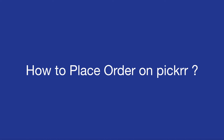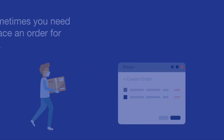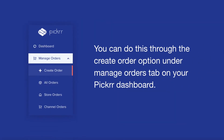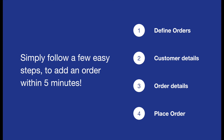How to place an order on Picker. As a seller, sometimes you need to manually place an order for your customer. You can do this through the Create Order option under the Manage Orders tab on your Picker dashboard. Simply follow a few easy steps to add an order within 5 minutes.